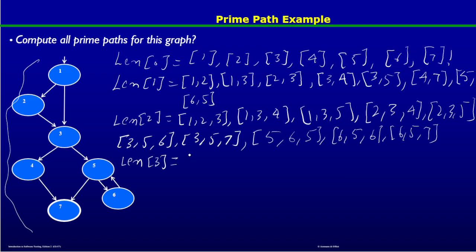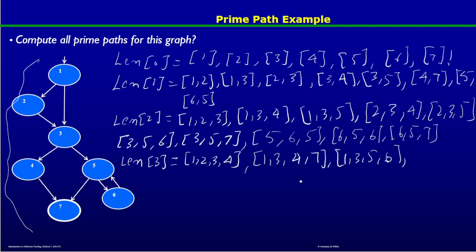Now I have to find paths of length 3. Starting from node 1: [1,2,3,4], [1,3,4,7], and [1,3,5,6]. From node 2 we can have [2,3,5,6], [2,3,4,7], and [2,3,5,7].